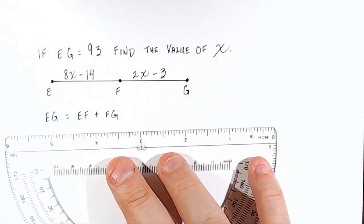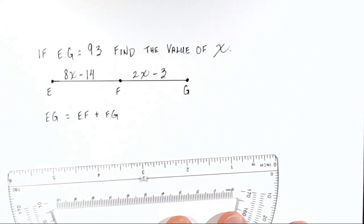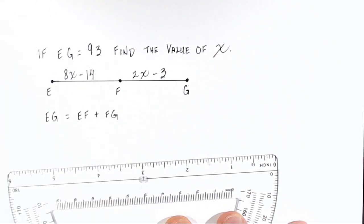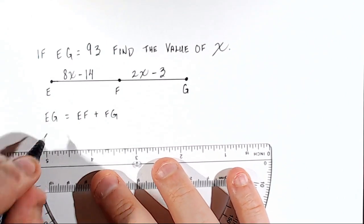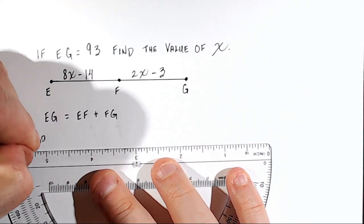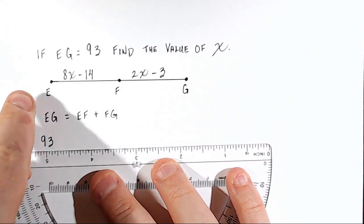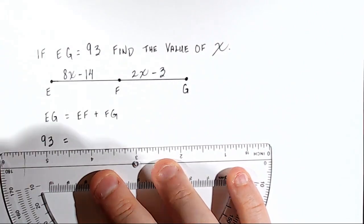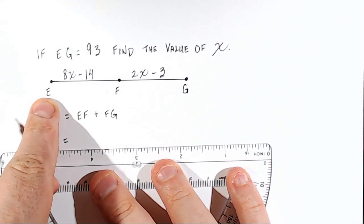Now, all those letters make it confusing, so let's replace these letters with what we're given. We were told that segment EG is 93. All right, so we'll replace EG with 93. We'll say 93, that's the total distance from E all the way to G, is equal to the distance from E to F.